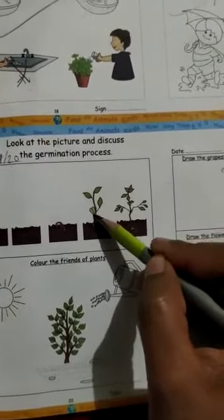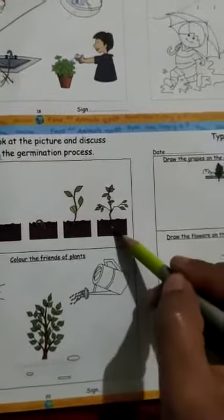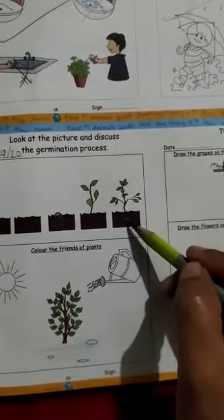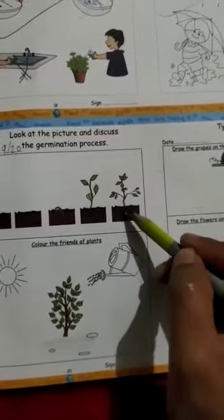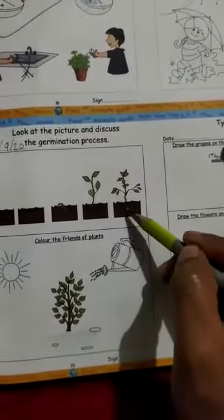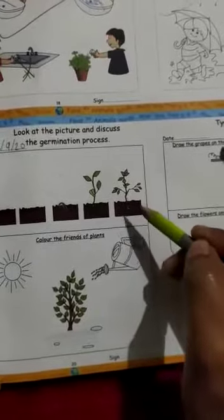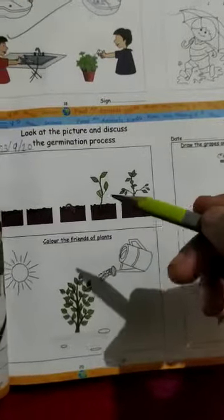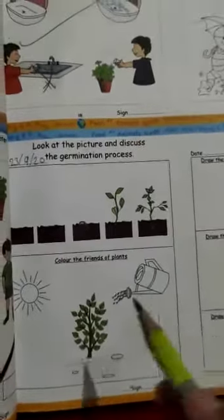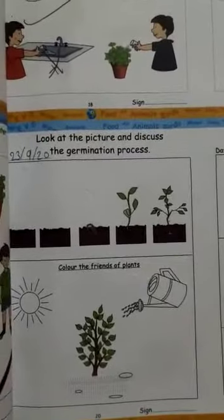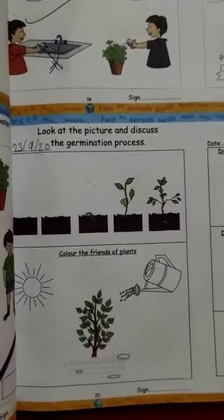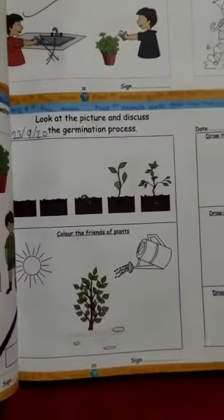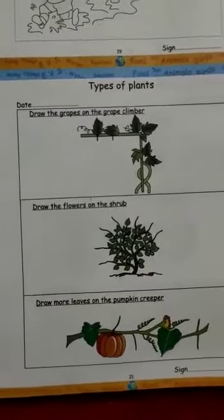After some time, the plant bears flowers. The flowers produce fruits and the fruits have seeds in them. That is called the germination process. Now everyone open page number 21.